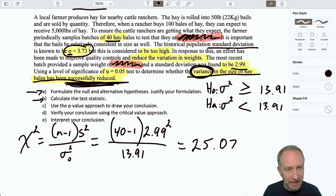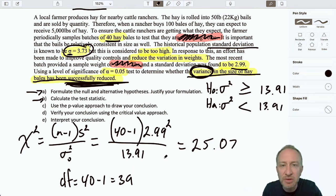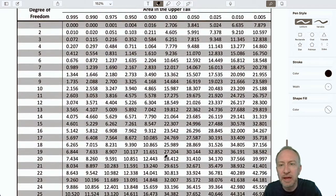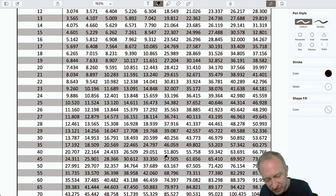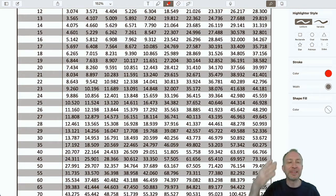You know the routine now, right? We have our test statistic, we have our degrees of freedom. 40 minus 1 is 39. I can now scroll down to our chi-squared table. Down, down, down, down. I have 39 degrees of freedom.